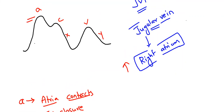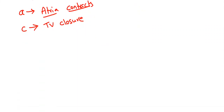We get the C wave on tricuspid valve closure. When the tricuspid valve closes — consider this as the right atrium and this as the right ventricle — there will be a bulge of the tricuspid valve. This again leads to an increase of pressure in the right atrium. The bulging of the tricuspid valve into the right atrium during ventricular contraction is the reason for the C wave.